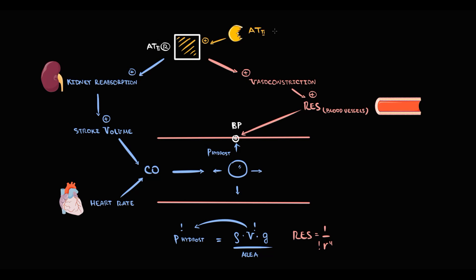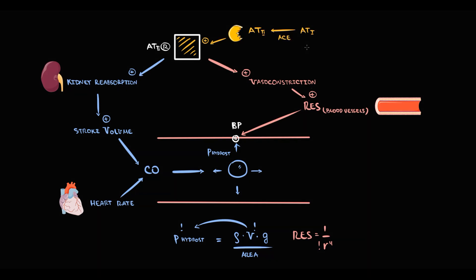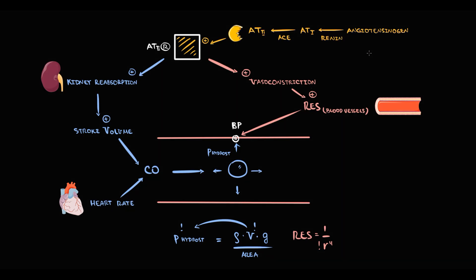Angiotensin 2 itself is just the final product of several reactions. Angiotensin 2 is made from angiotensin 1, and the enzyme that provides this conversion is called angiotensin-converting enzyme (ACE). In turn, angiotensin 1 is produced from angiotensinogen, and the enzyme that provides this conversion is called renin. So there are several factors required to activate the angiotensin 2 receptor, which in turn increases blood pressure.